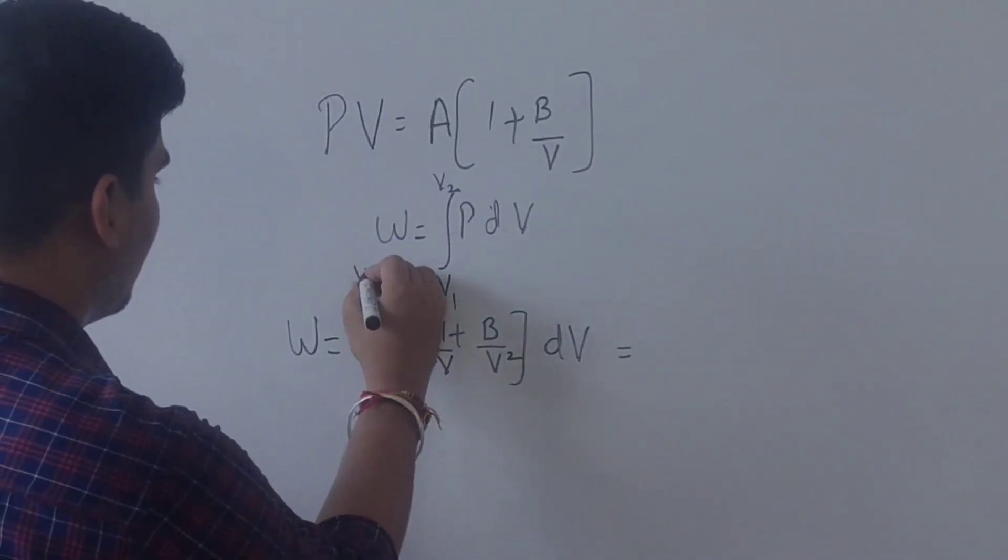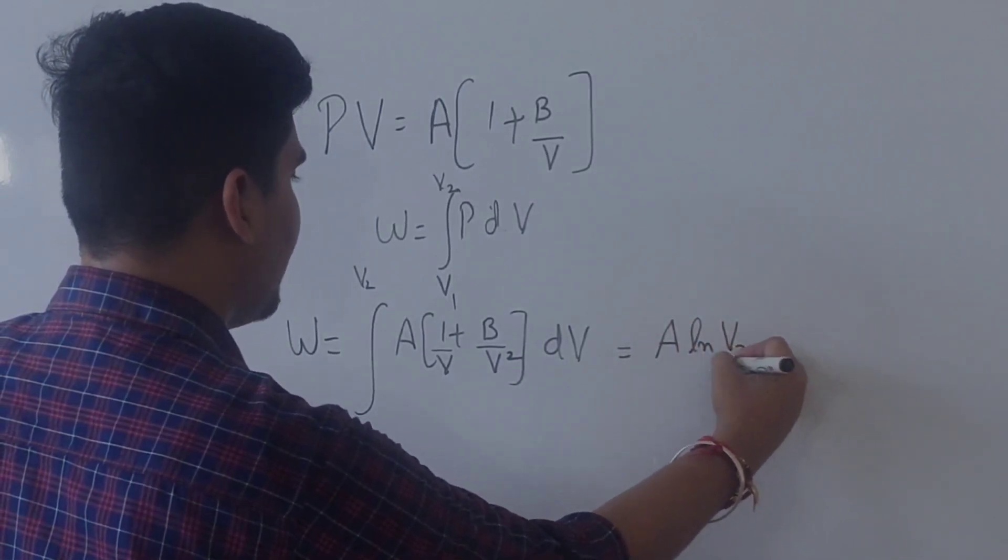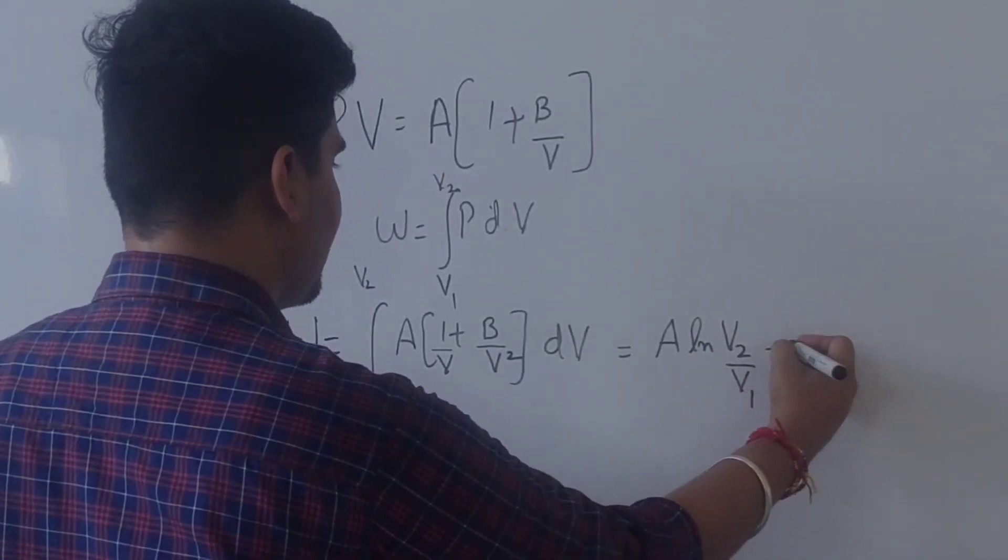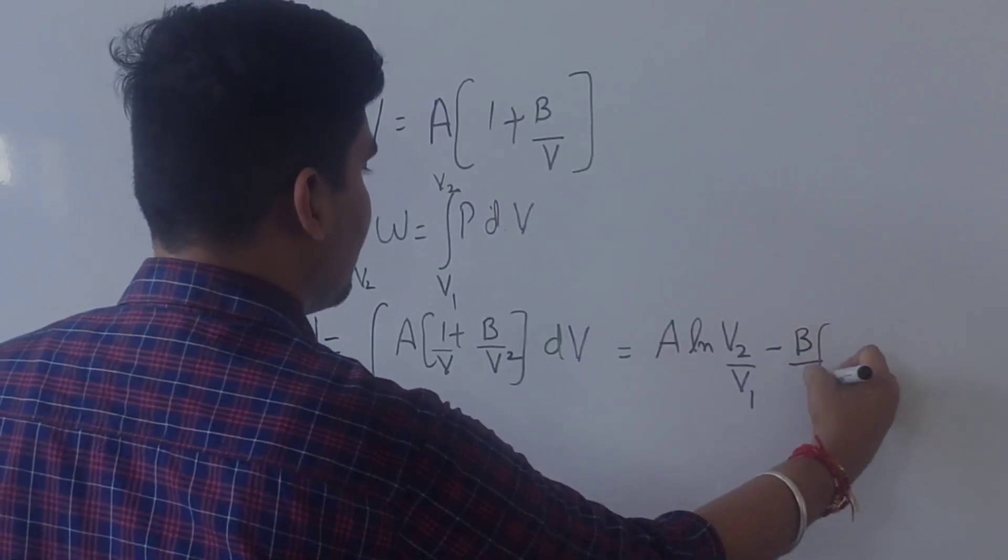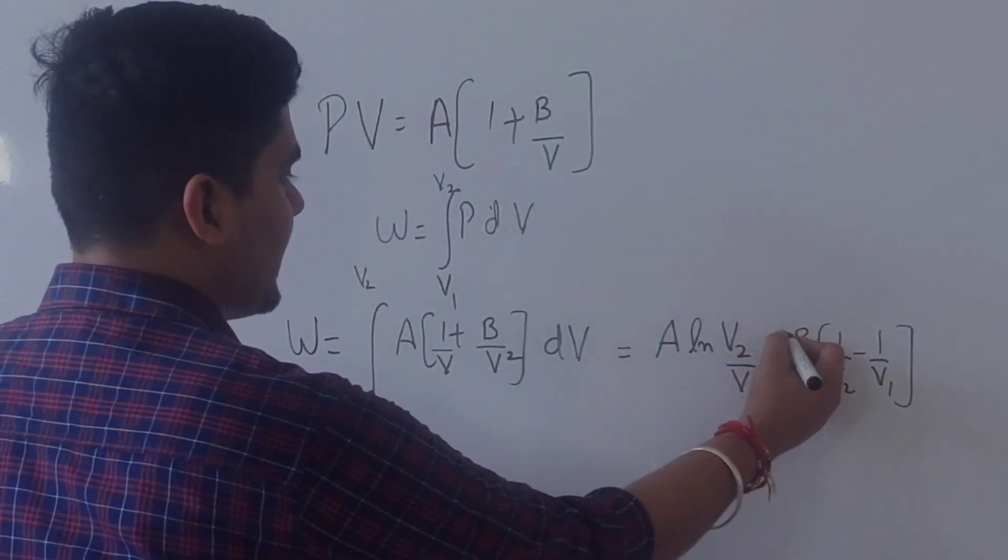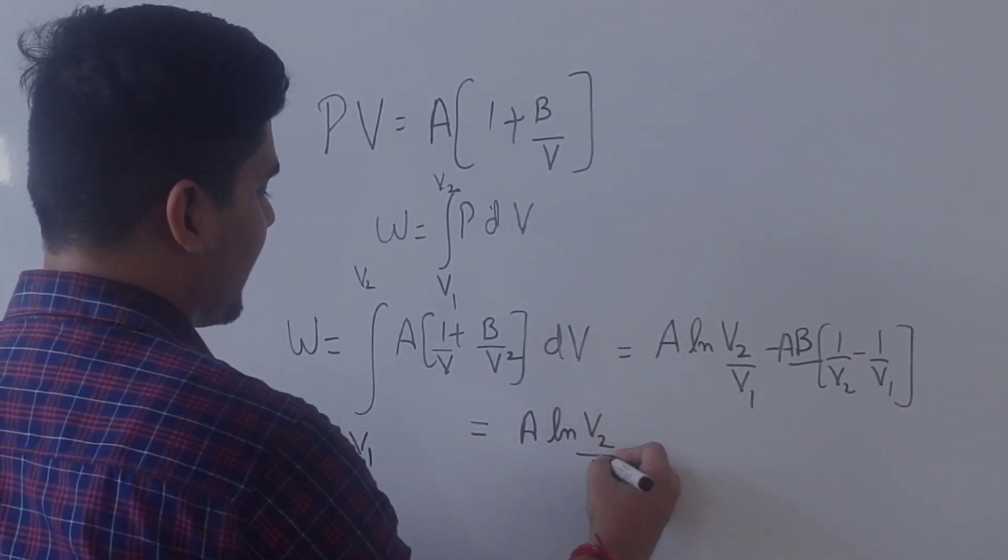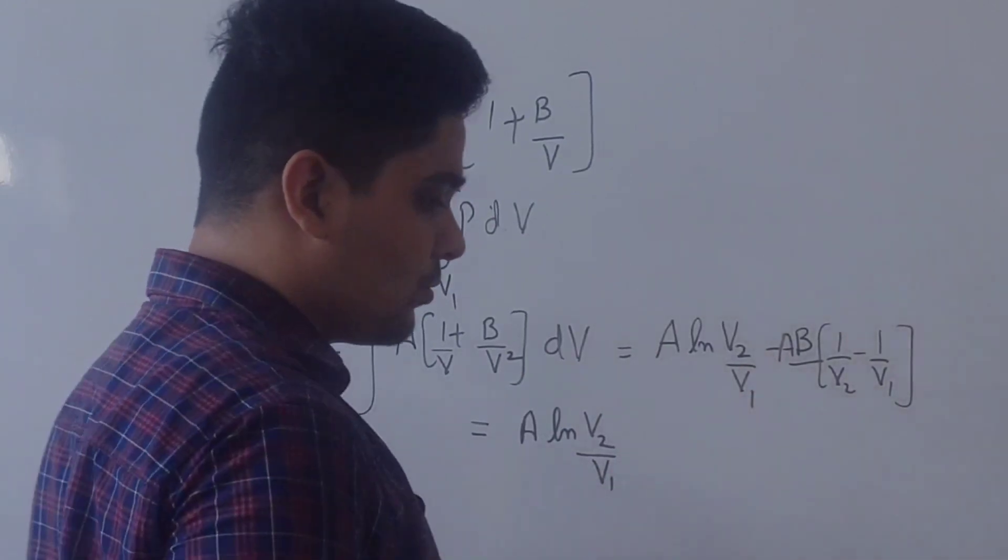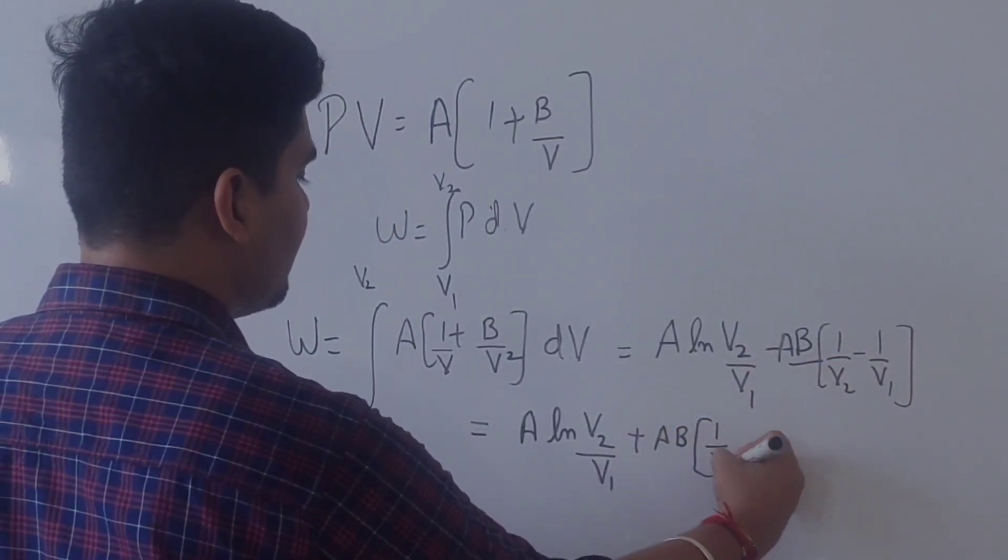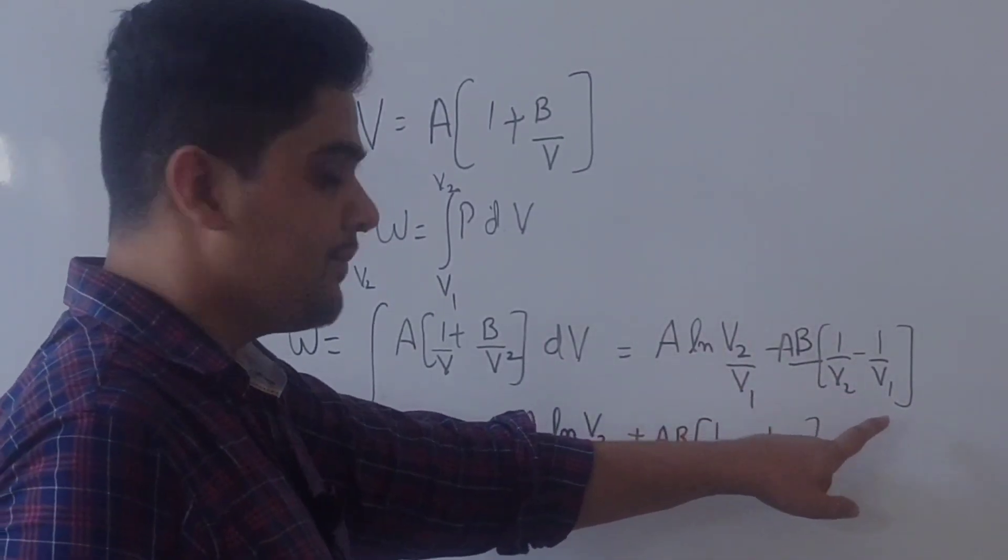After integrating, I will get A natural log V2 by V1 minus B times (1 over V2 minus 1 over V1). So this is the option.